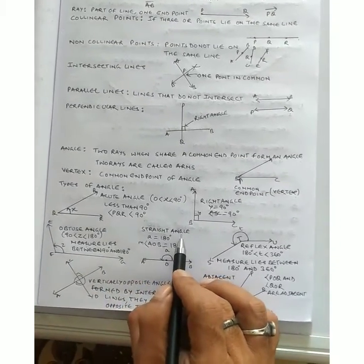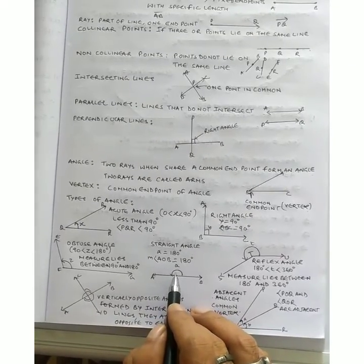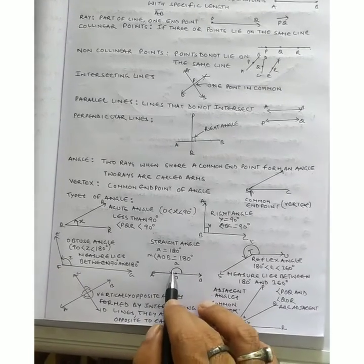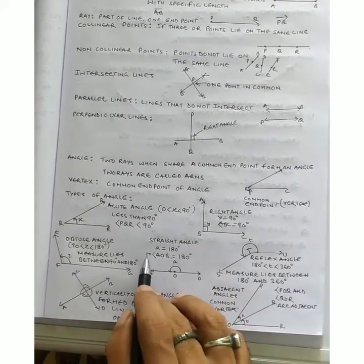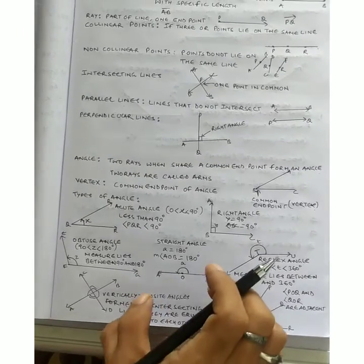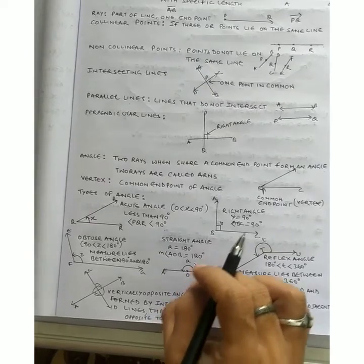Now what is a straight angle? Straight angles are those angles whose measure is 180 degrees. Ye suppose AOB is a straight angle, and its measure is a. Then measure of angle AOB equals to 180 degrees. Agar koi bhi angle hai jiska measurement 180 degree hai, usse kehte hain straight angle.